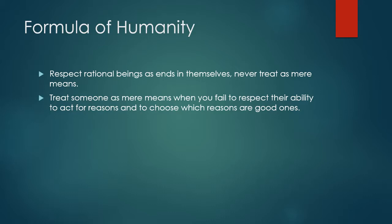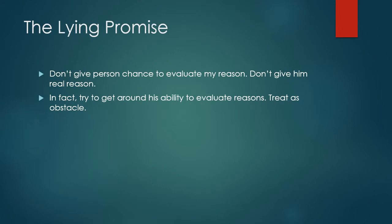Let's look at another example — the lying promise example. What are you doing in that case? I told the person, 'give me some money, I'll pay you back in a month.' But that's not really my reason — my reason is I want the money and never have to pay it back. I don't give my friend my real reason, so he never has the chance to evaluate whether he thinks that's a good reason. The reason I don't give him my actual reason is because I think he'll evaluate it and reject it. So I lie to him and try to manipulate him. I'm treating his ability to reason as an obstacle that I need to get around.